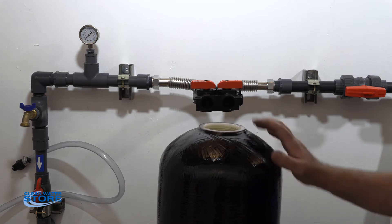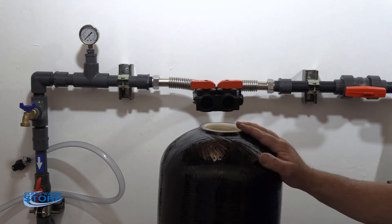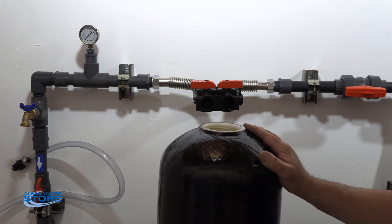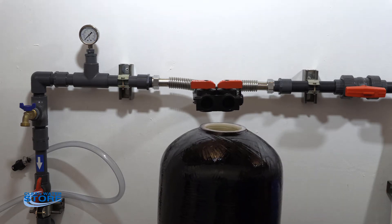As I mentioned before, this video covers all the different types of media that we would be using with this control valve. One thing we do suggest if you are using a carbon system, you're going to want to soak this with a cup of bleach prior to installing your control valve.